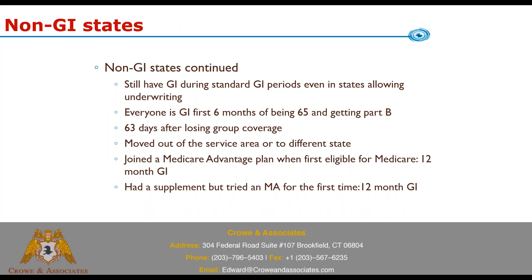Even in non-GI states, you still have standard guaranteed issue periods from the federal government. Everyone is guaranteed issue for the first six months of being 65 and getting Part B — it cannot be underwritten. You're also guaranteed issue for up to 63 days after losing group coverage, and guaranteed issue if you move out of a service area or to a different state.